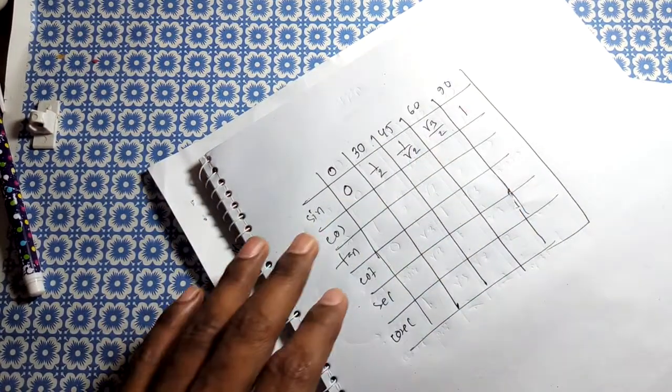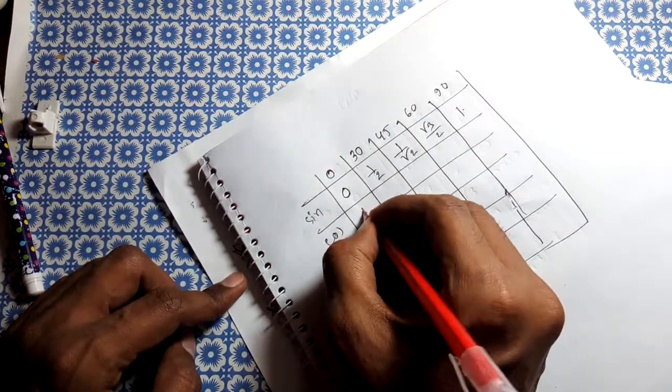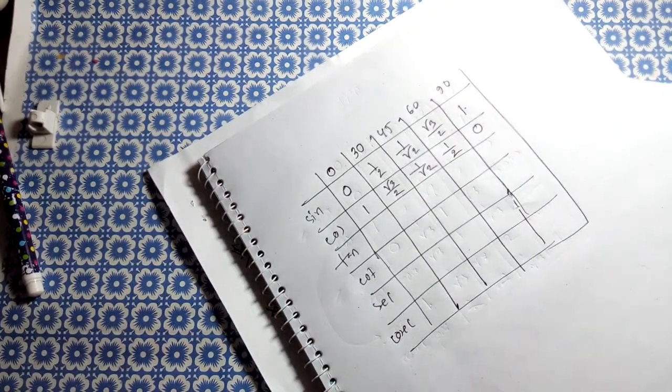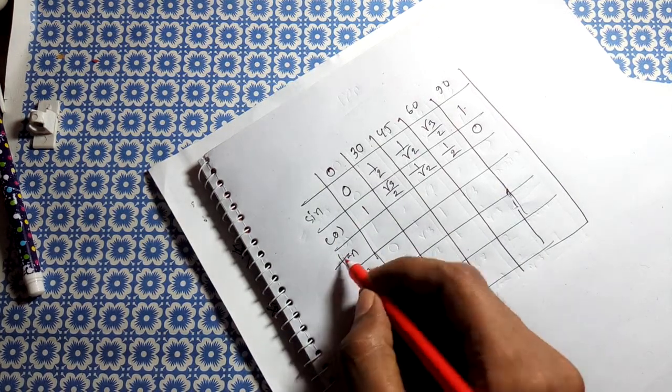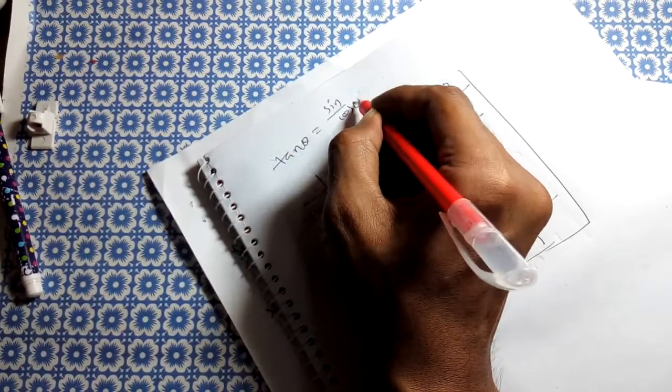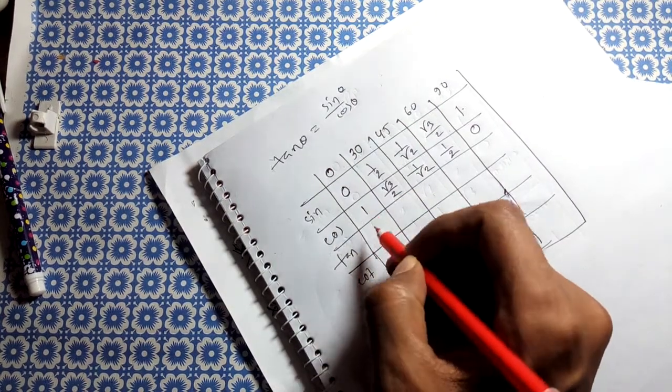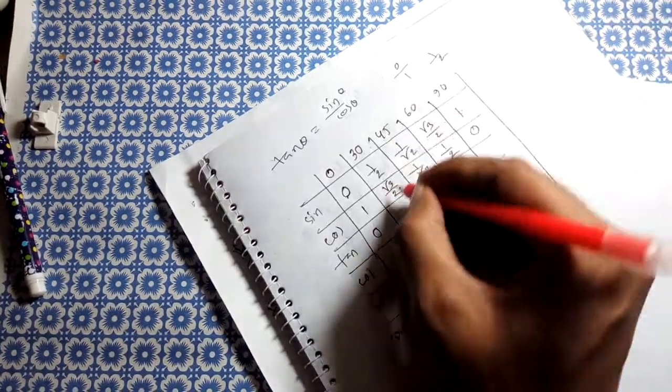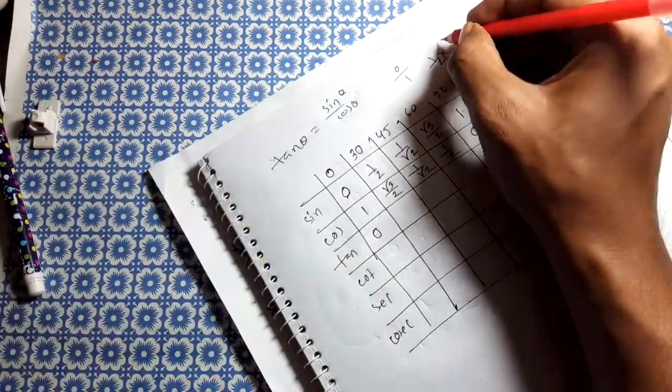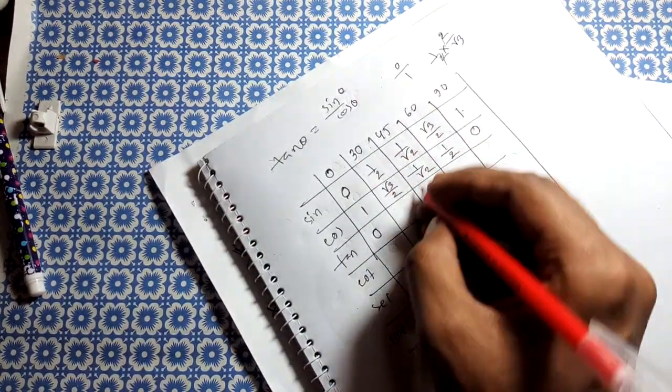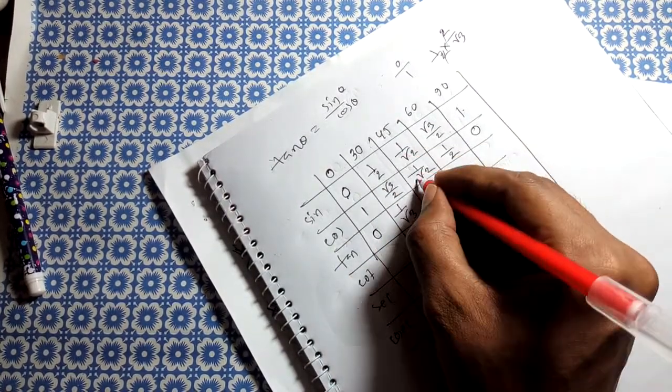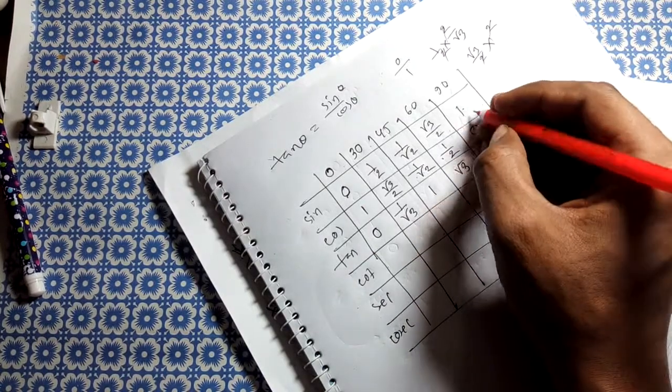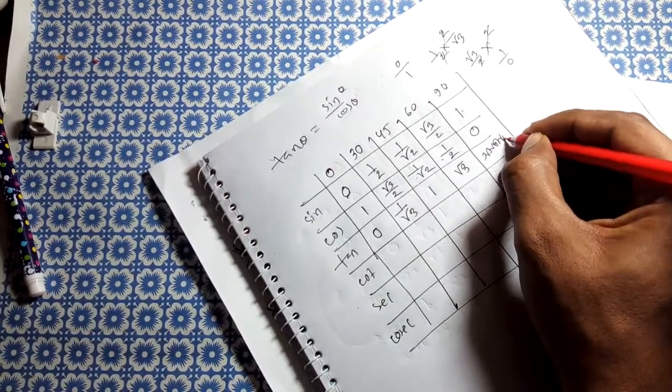For tan theta, which equals sin over cos: at 0 degrees it's 0, at 30 degrees it's 1 by root 3, at 45 degrees it's 1, at 60 degrees it's root 3, and at 90 degrees it's 1 by 0 which is undefined. Each value comes from dividing the corresponding sin and cos values.